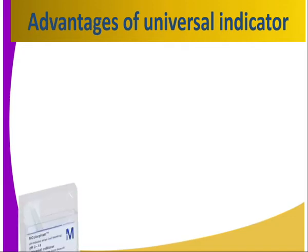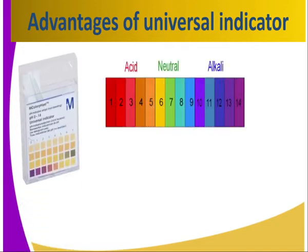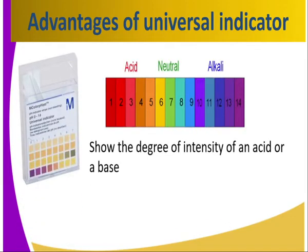What are the advantages of using universal indicator? A universal indicator will show the degree of intensity of an acid or a base. It can tell whether a substance is acidic or basic, and more so, it can tell whether the substance is a strong acid or a weak acid, a strong base or a weak base. Therefore, it is important for us to know where these substances range using the pH scale.